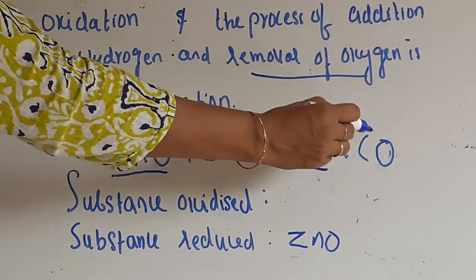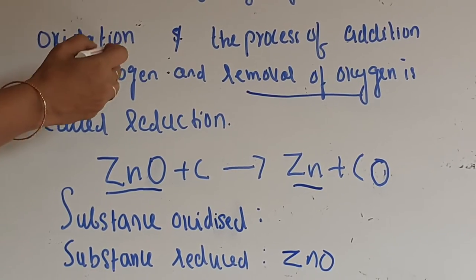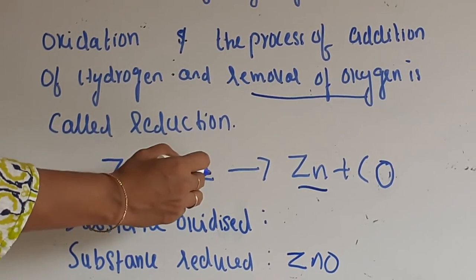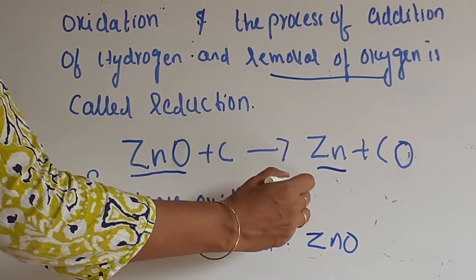Now see the carbon is changing to carbon monoxide. You have learned addition of oxygen is called oxidation. So carbon is oxidizing to CO. So the substance oxidized will be C.